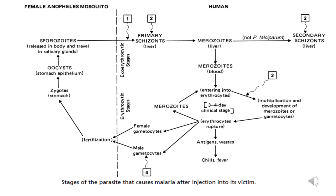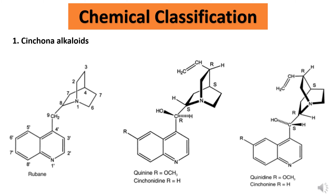Let's see the chemical classification of anti-malarial drugs. The first category is cinchona alkaloids. Examples include rubane, quinine, quinidine, cinchonine, and cinchonidine. The structures of quinine and quinidine differ only in configuration — quinine has R and S configuration, quinidine has S and R configuration. Similarly, cinchonine and cinchonidine also differ in configuration.